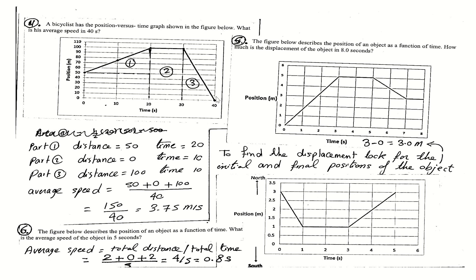In part three, the cyclist started from 100 and ended at zero, so the distance covered is 100 meters. Total distance: 50 plus 0 plus 100 equals 150 meters. Total time is 40 seconds. Average speed equals 150 divided by 40, which is 3.75 meters per second.